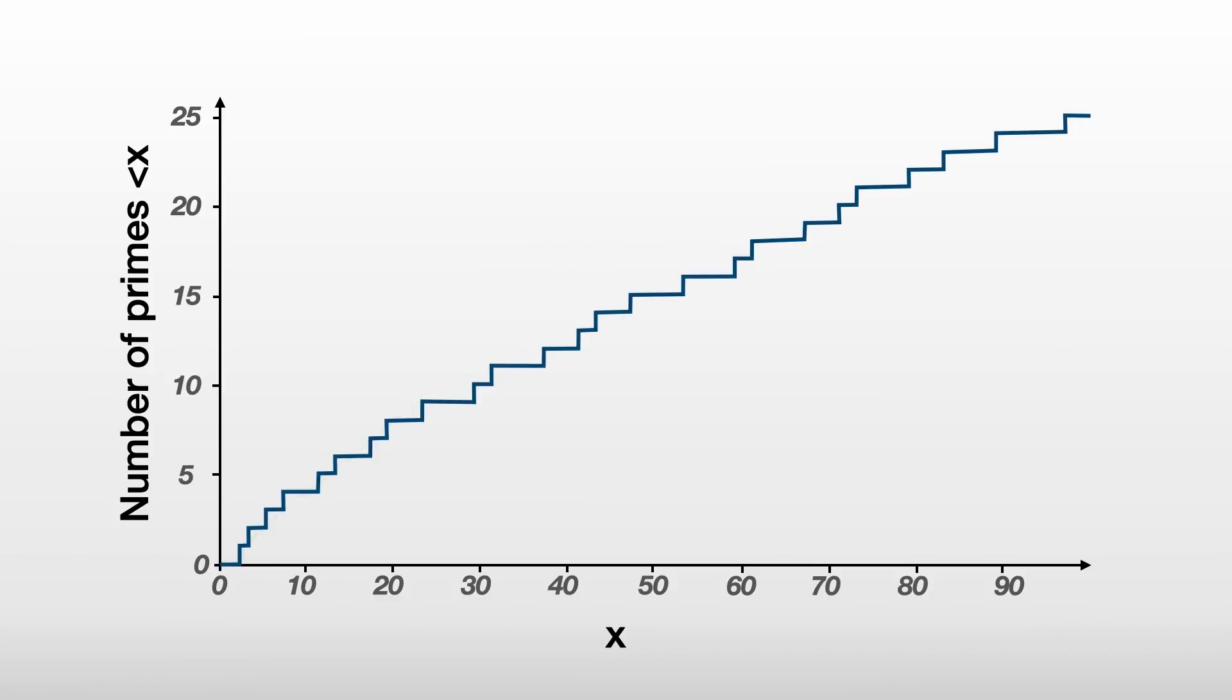The slope of this prime counting function seems to decrease as we go further to the right. In part, this is because the gaps between the primes, seen here as horizontal lines, tend to get larger.